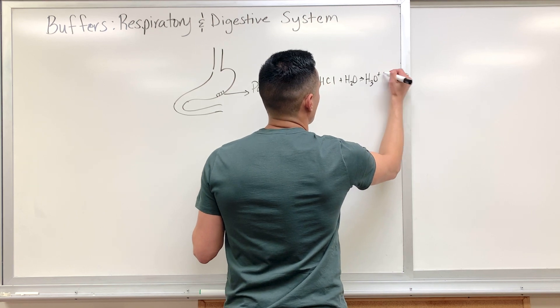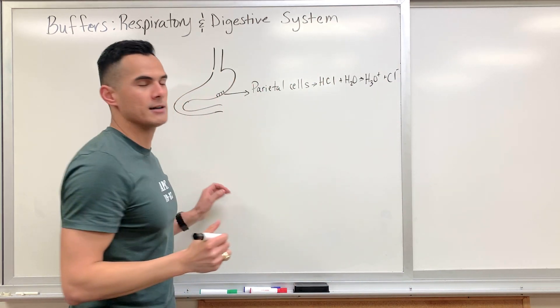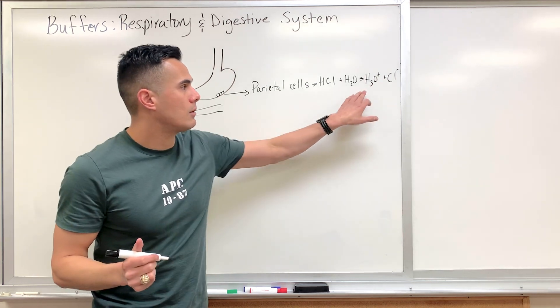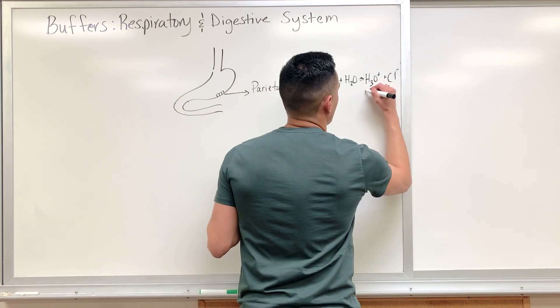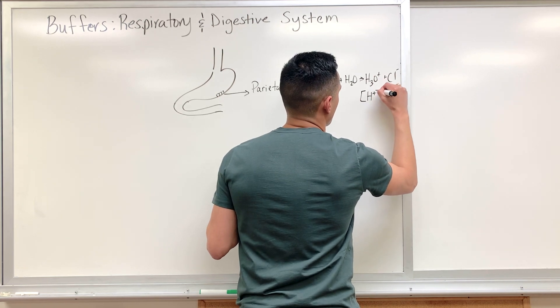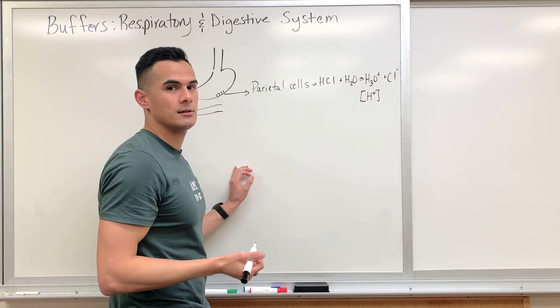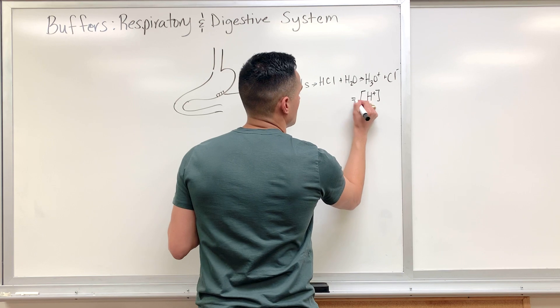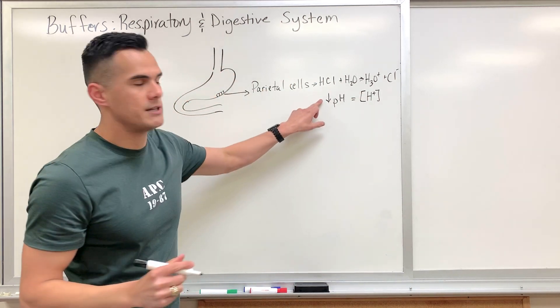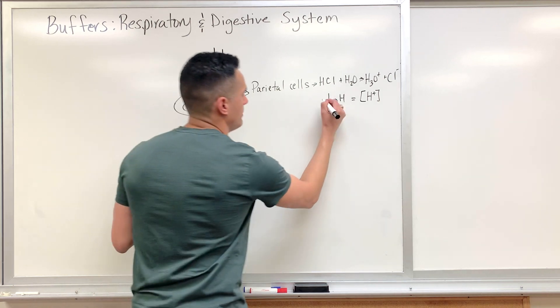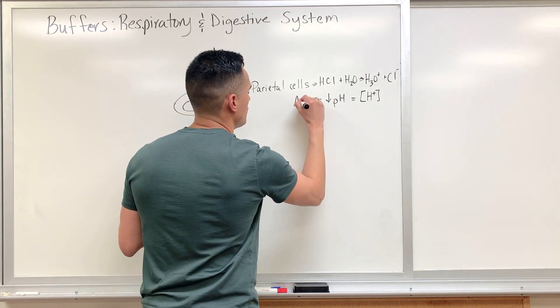H3O plus and our chloride ions. So when there's an increase in H3O plus or an increase in our proton concentration, the effect is a decrease in pH. A decrease in pH means that it's more acidic.